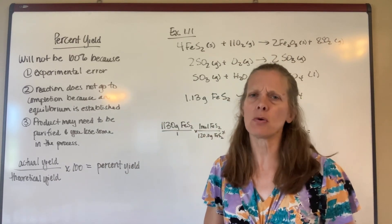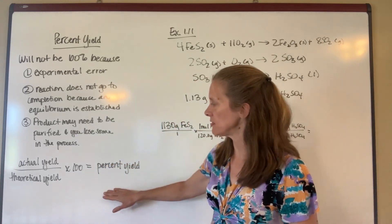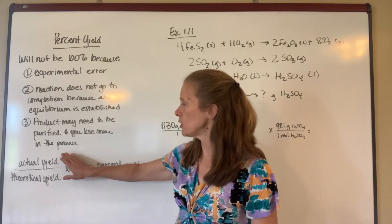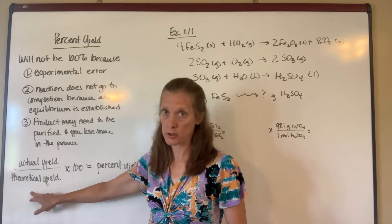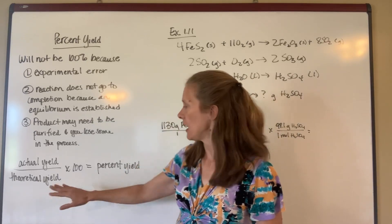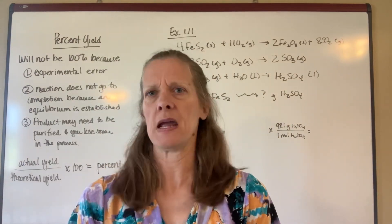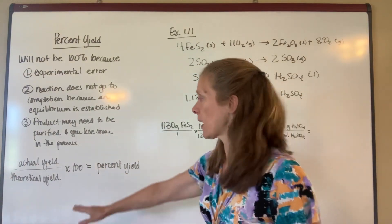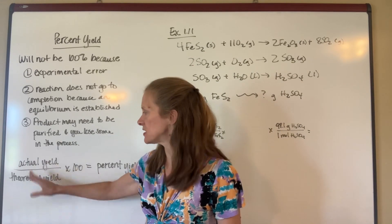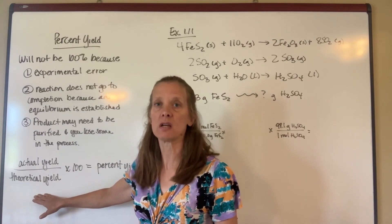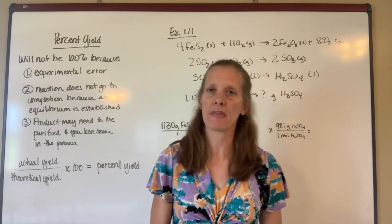He doesn't give you a nice neat equation for percent yield, so I would recommend you actually remember this one: you take actual yield and divide it by theoretical yield — which is what you get from stoichiometry — multiply by 100, and that gives you percent yield. He words it in the book as the amount that you should have made, but the proper term is theoretical yield. This is usually the way you're going to see it worded in other books, so I would jot that down.